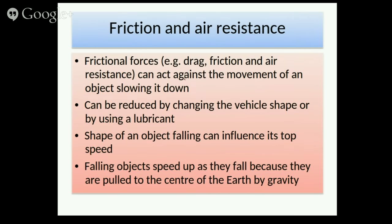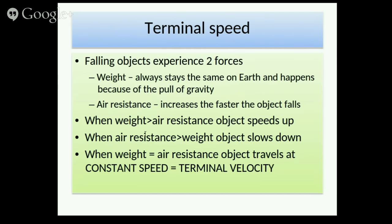Frictional forces can act against the movement of an object, slowing it down. They can be reduced by changing the vehicle shape or using a lubricant. The shape of a falling object can influence its top speed, and falling objects speed up as they fall because they are pulled towards the centre of the Earth.